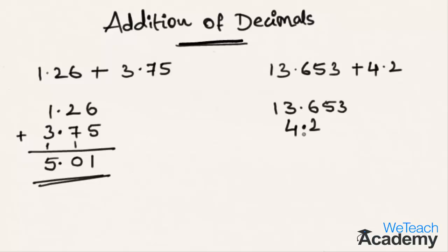Here both numbers are of different length, so you can add zeros after the decimal point. Any number of zeros after the decimal point doesn't make a change in the value of the decimal number.